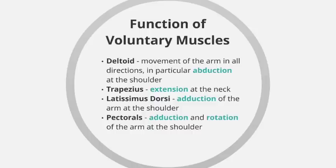The pectorals are responsible for adduction and rotation, so there's a bit more movement involved. A good example would be a rugby player making a tackle — as their opponent comes towards them, they wrap their arms around the opponent and bring them in towards their own body, so the pectorals are responsible for bringing the arms in.